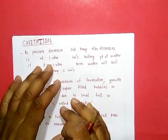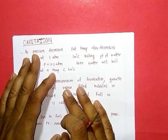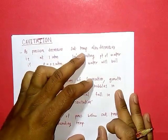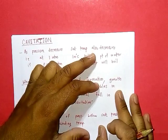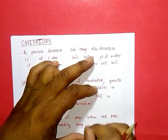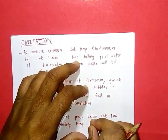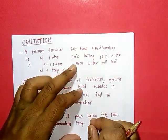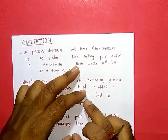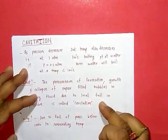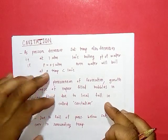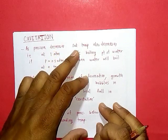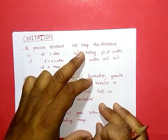First, cavitation in turbines. Before studying cavitation, we know that as pressure decreases, saturation temperature also decreases. For example, at one atmospheric pressure the boiling point of water is 100°C. If pressure is reduced to 0.5 atmosphere, water will start boiling at around 25–30°C. As pressure decreases, the corresponding saturation temperature also decreases — this is the basis for cavitation.